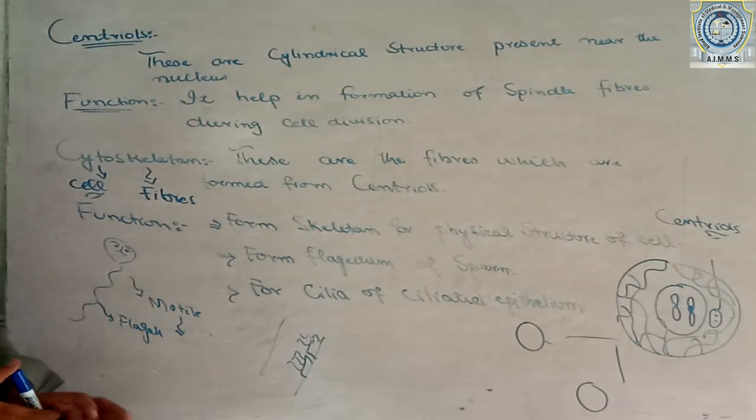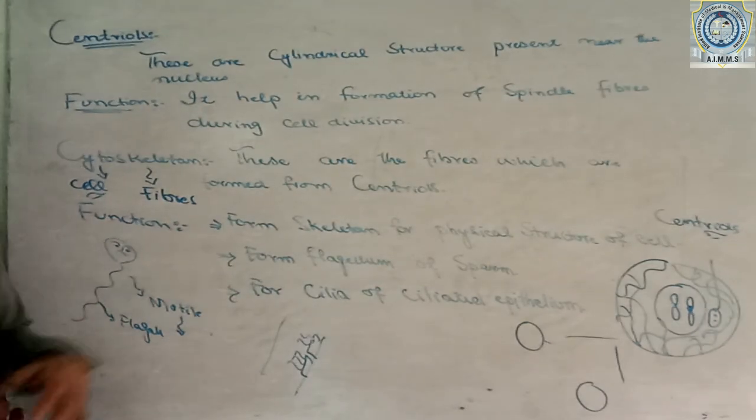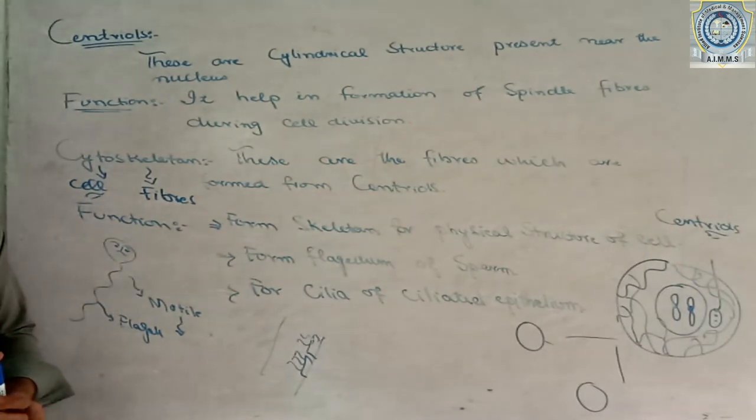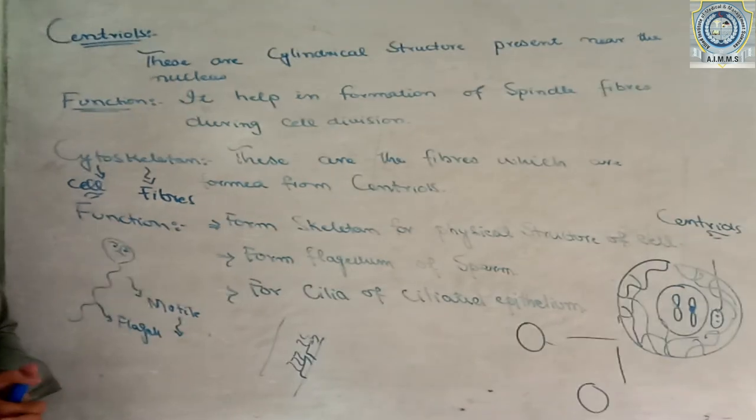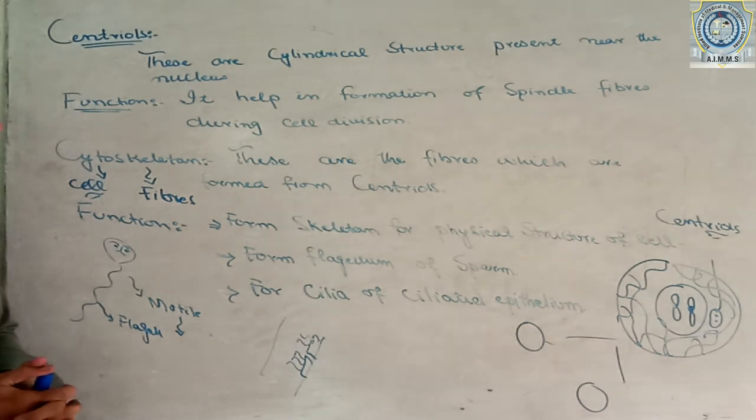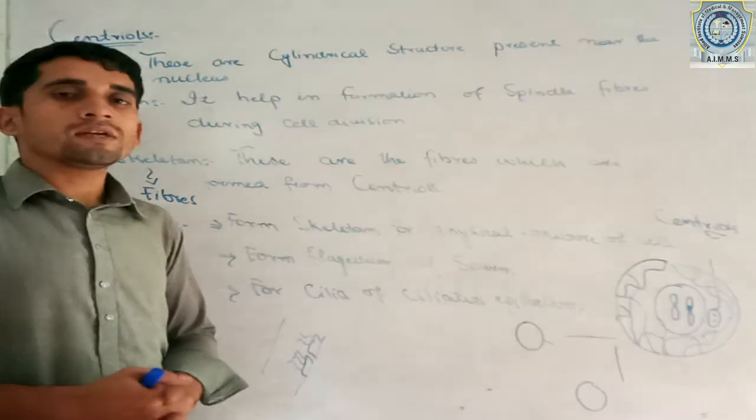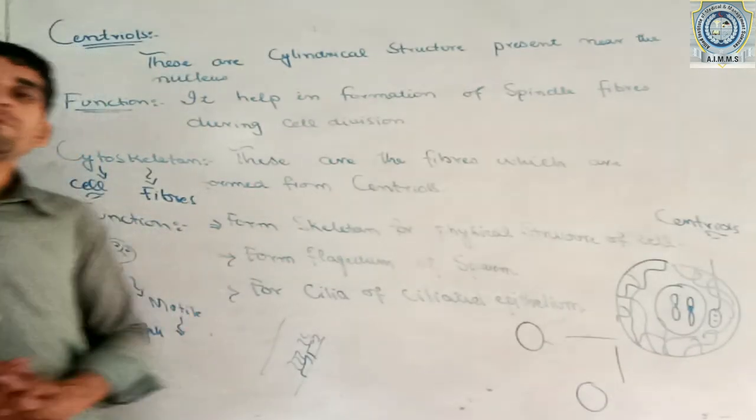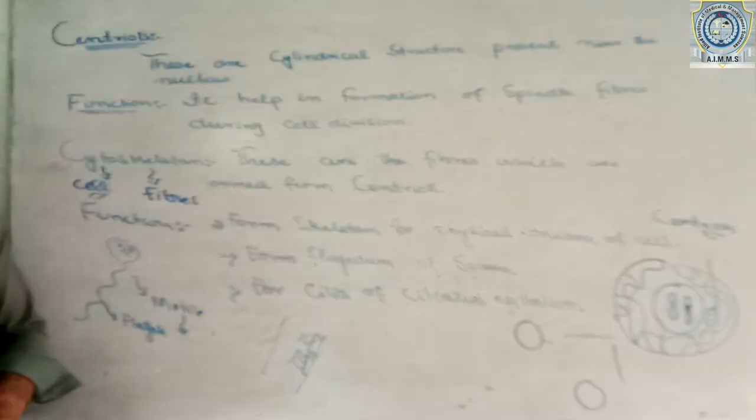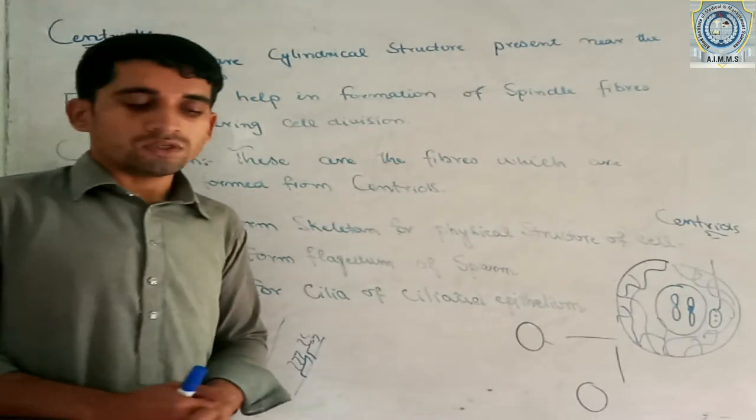We have spandle fibers with chromosome formation with the help of the cytoskeleton. Cytoskeleton of the fibers, like structures of the body of the spandle fibers, the physical structure of the sperm and the motility.